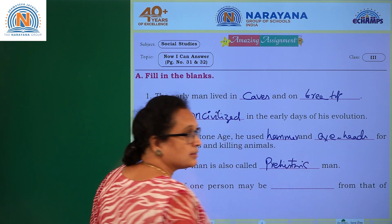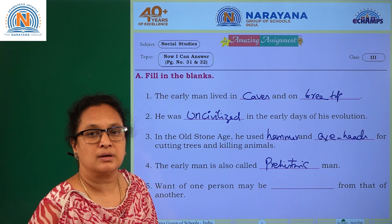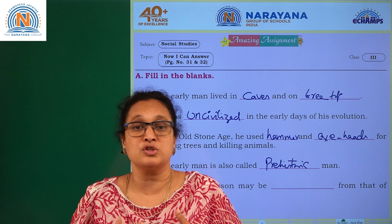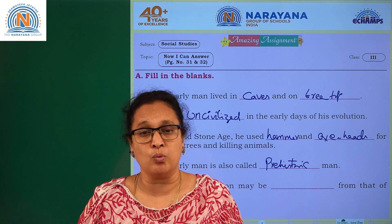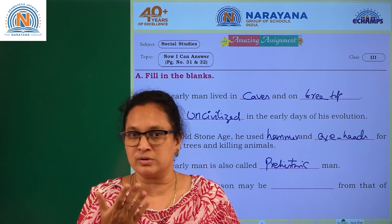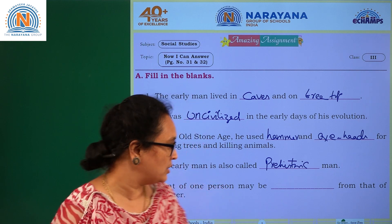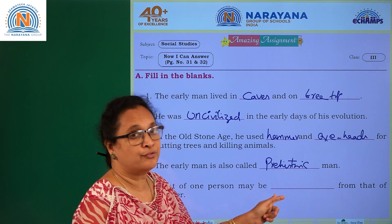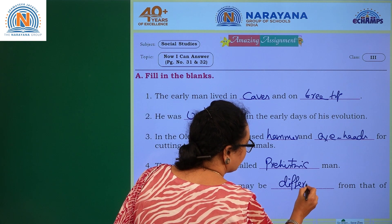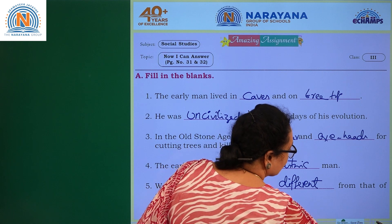Coming to the next one: wants of one person may be different from that of another. I may want to eat vanilla ice cream right now, and you may want strawberry — so wants are different for different people. The answer is: wants of one person may be different from that of another.